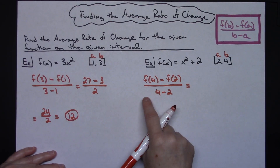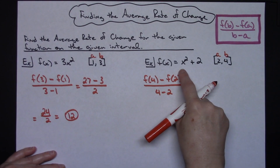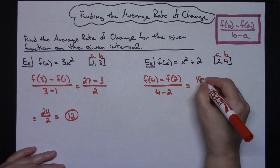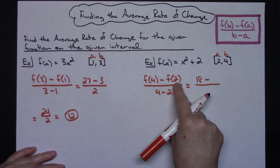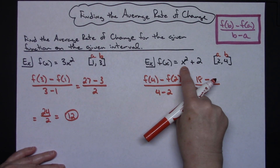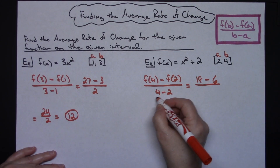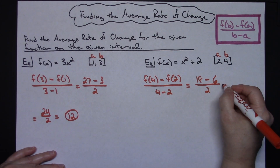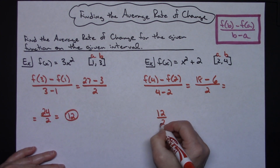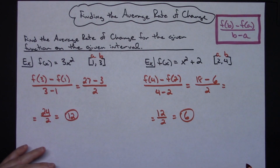Using function notation: take 4 and plug it into the function — 4 squared is 16, plus 2 is 18. Then take 2 and plug it in — 2 squared is 4, plus 2 is 6. And 4 minus 2 gives 2 on the bottom. That leaves 12 over 2, giving an average rate of change of 6.